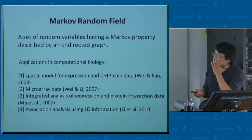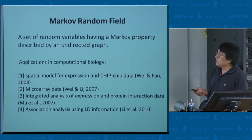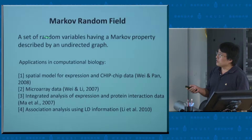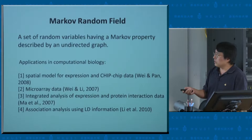For laziness, this is a definition from Wikipedia. It's basically a set of random variables having the Markov property described by an undirected graph — three key words. A Markov random field is a way to model the joint distribution of a set of random variables with an underlying undirected graph relating these different variables. We can talk about Markov chains, but the Markov chain is linear or sequential. The Markov random field is defined by a graph.